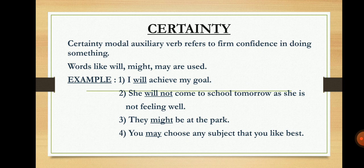The last type is certainty. Certainty means having firm confidence in ourselves — for example, 'Certainly, I will do this.' Certainty modal auxiliary verb refers to firm confidence in doing something. Words like will, might, and may are used. For example: 'I will achieve my goal' — 'will' shows certainty. 'She will not come to school tomorrow as she is not feeling well' — 'will not' shows certainty. Modal auxiliary verbs can be positive, negative, or interrogative.